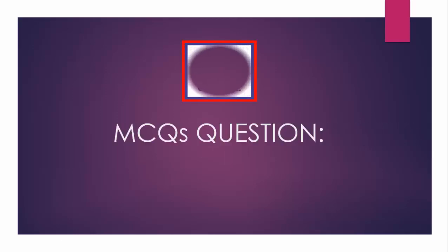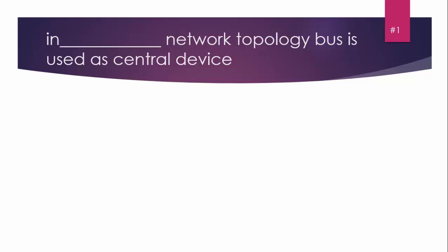First of all, we are going to discuss MCQs. MCQ number one: In blank network topology, bus is used as a central device. Options are: A) Bus, B) Star, C) Mesh, and D) Ring. The answer is Bus, because in bus topology the central device is also a bus.